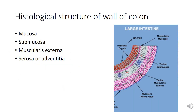The wall of the colon consists of the typical four coats of the digestive tract: the mucosa, submucosa, muscularis externa, and serosa or adventitia.